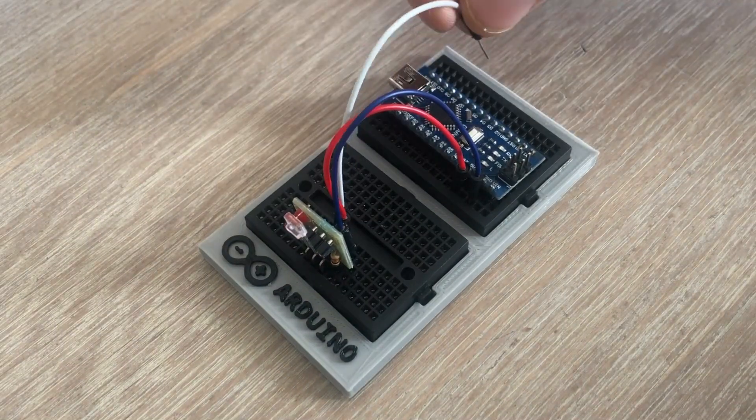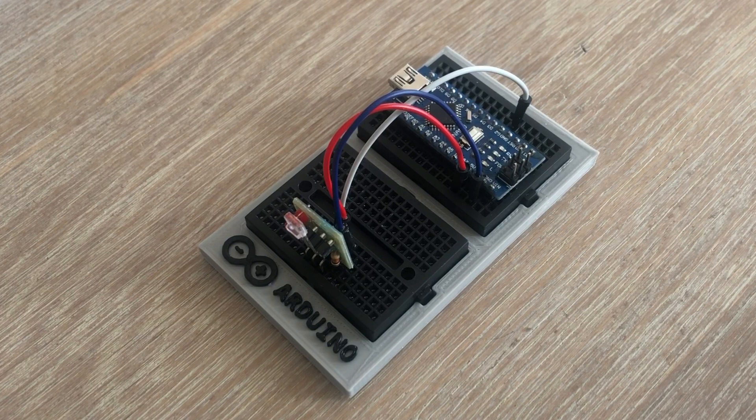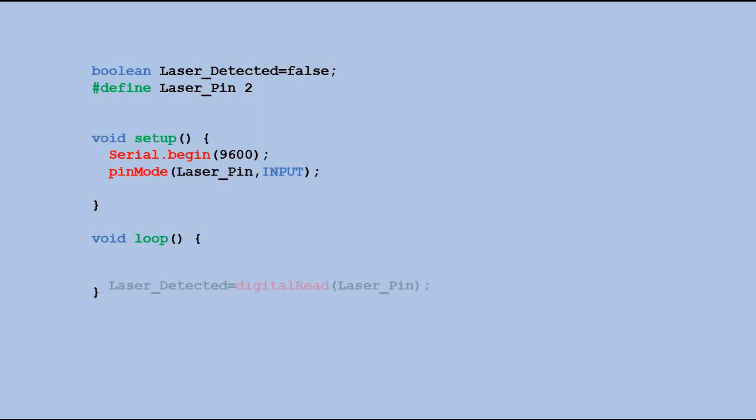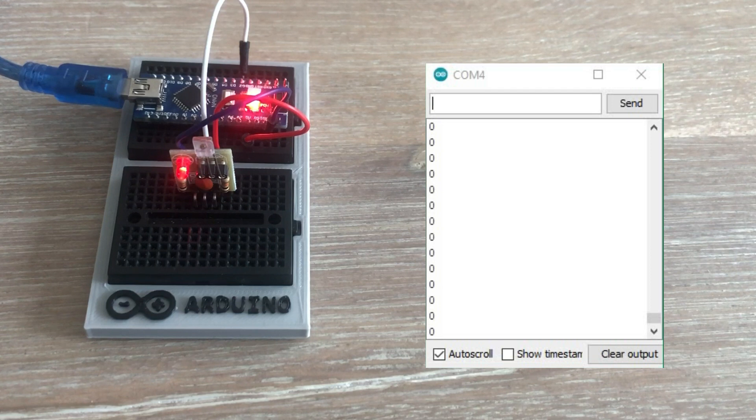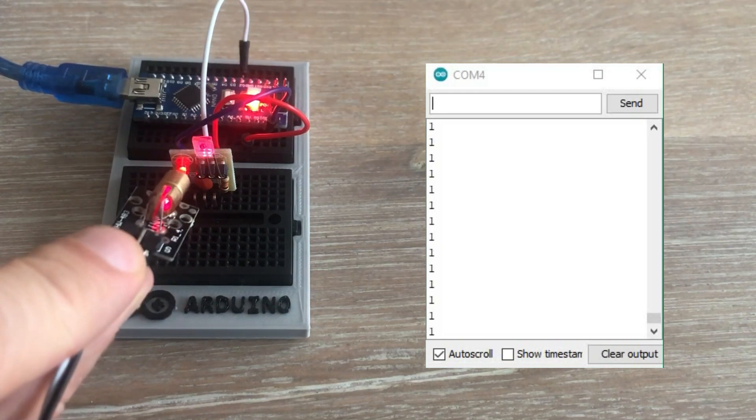Now that we have receiver connected we can look at the code. I will start with the most basic code that will read the signal from the laser receiver and display its current state in the serial monitor. We need the variable that will be used to capture the state of the sensor. We also need to define the pin to which the laser sensor is connected. In setup we open the serial monitor and also configure the laser pin as input. In loop we read the state of the sensor with digital read and save it to laser detected variable, which we then output to serial monitor using print method. Let's see how this works. When there is no laser detected we see zero being output. Each time we point the laser beam at the sensor we see one in the serial monitor.